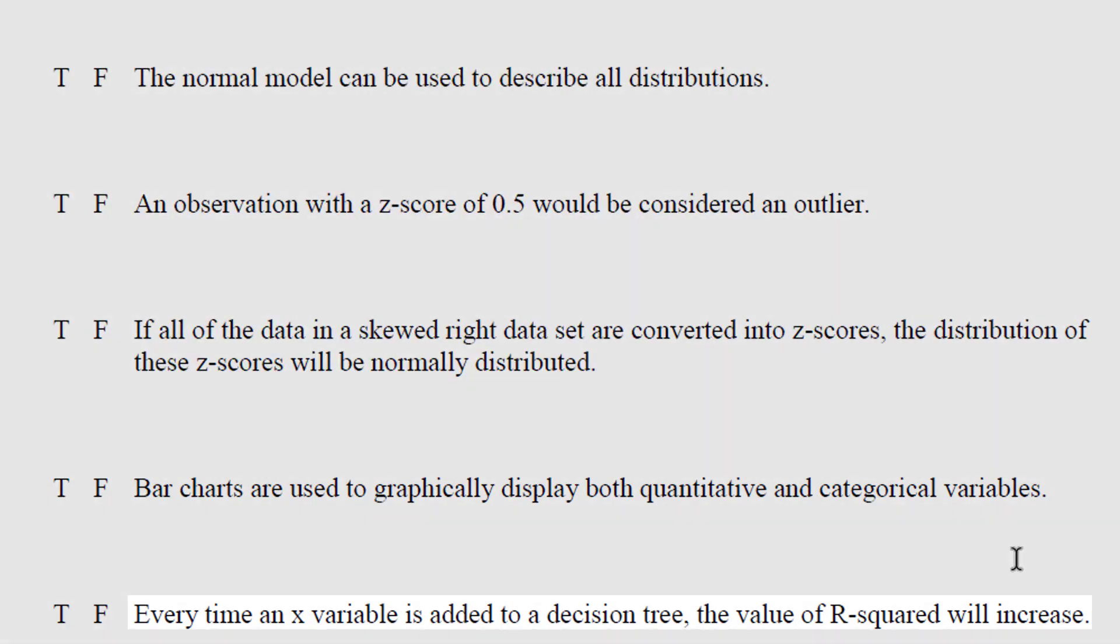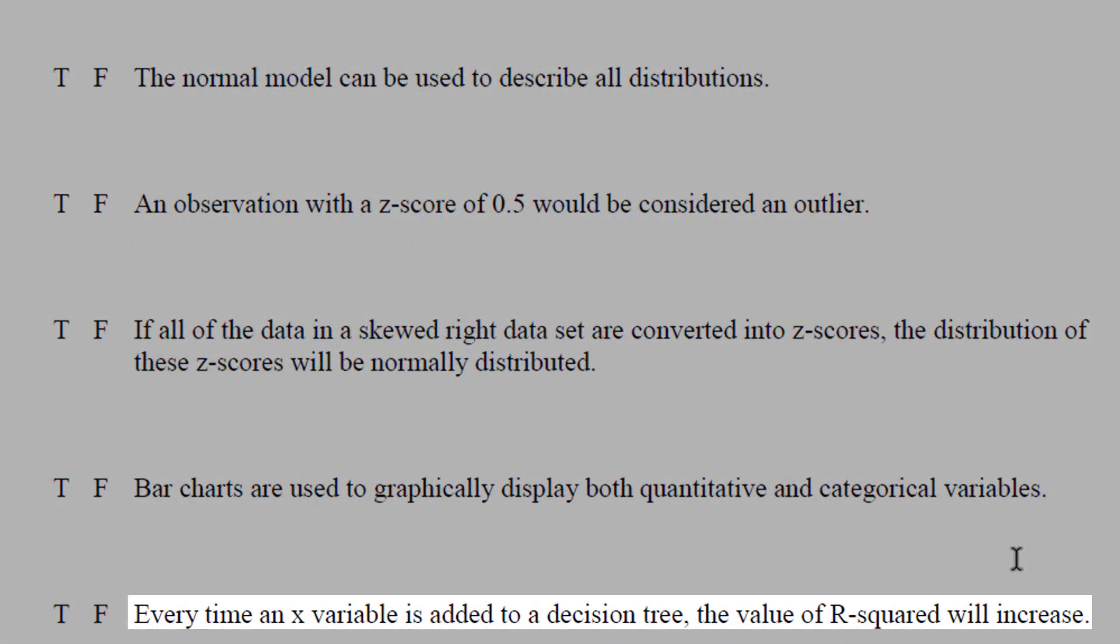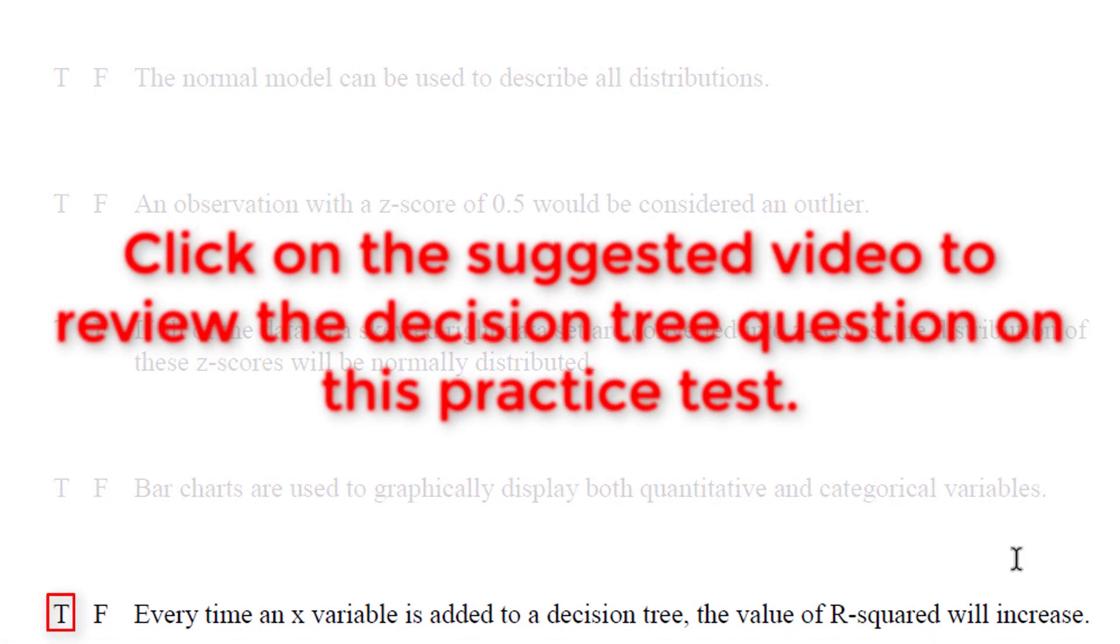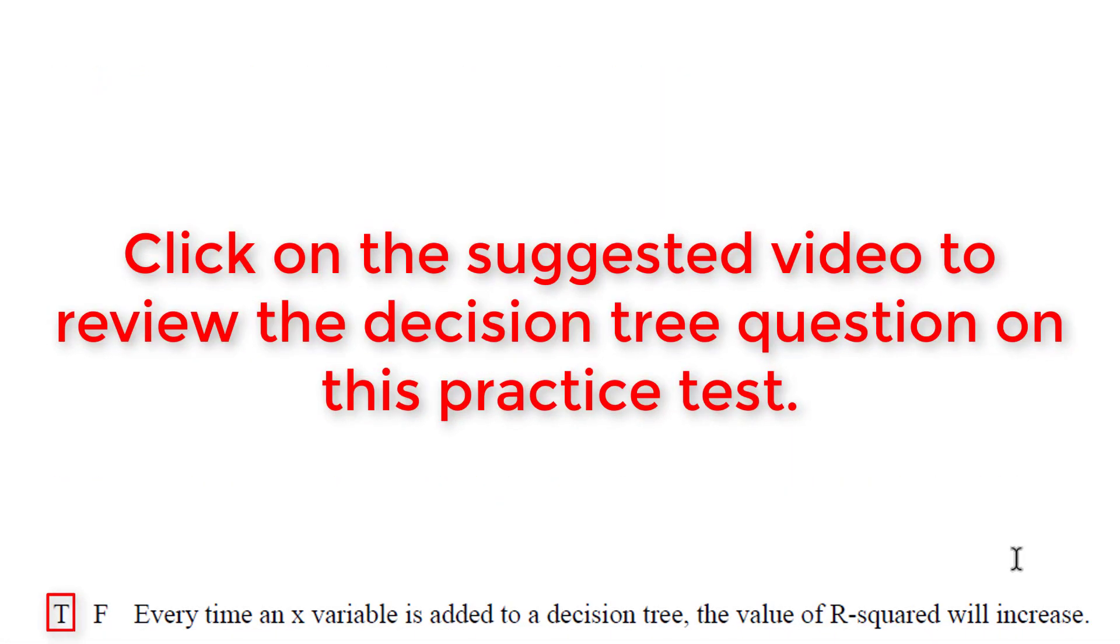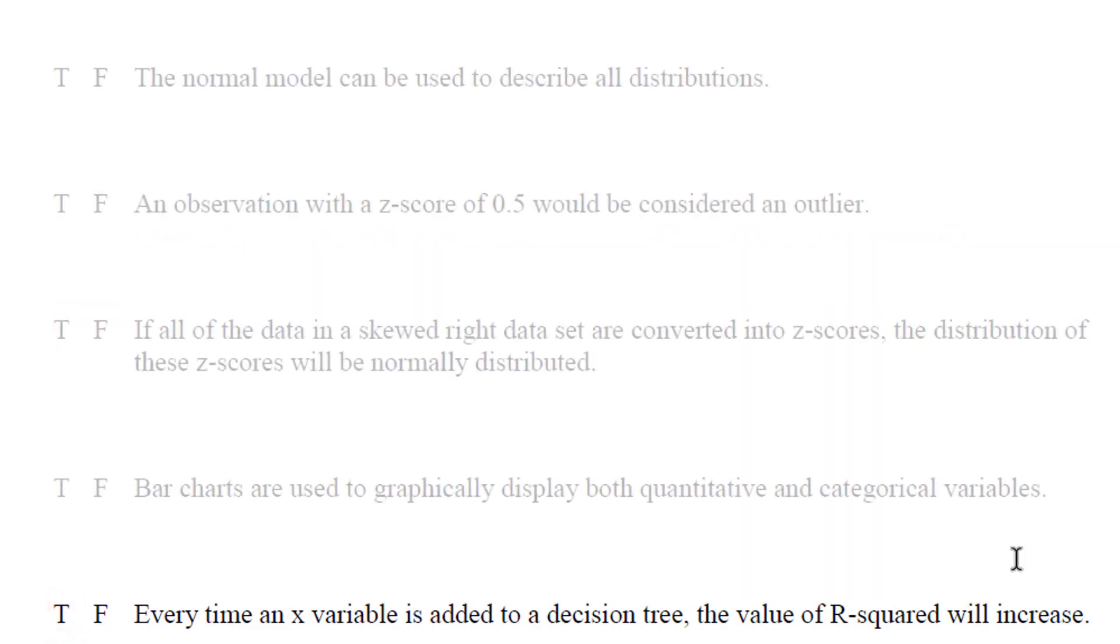Next, every time an x variable is added to a decision tree, the value of r squared will increase. And this is very true. If we are going to add in a variable, it does something, it explains some variation. So when we add in a variable, it will explain variation, and r squared will increase. This relates to the last question. X's explain, and they will explain variation, and every split we do will increase r squared. This is definitely true.